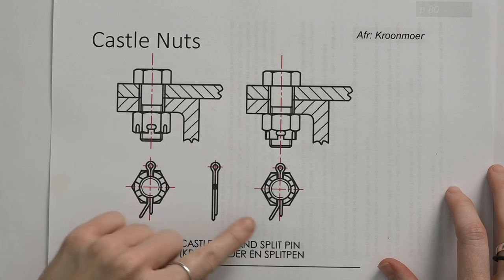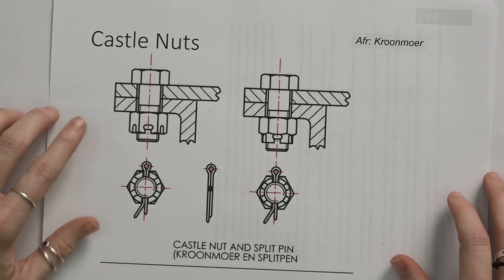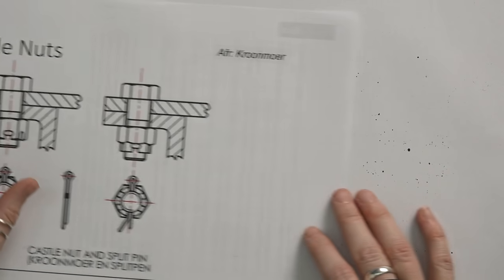This is the final drawing that we'll see, but before we get there, let's look at each of these three individual parts that make up a castle nut.